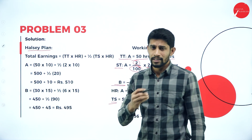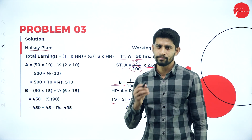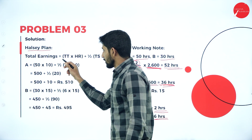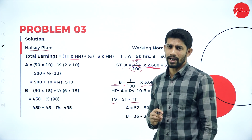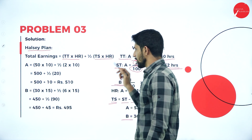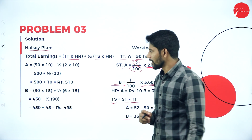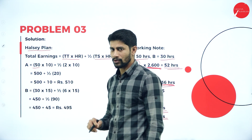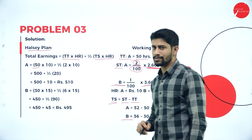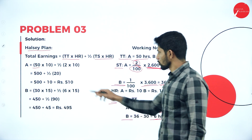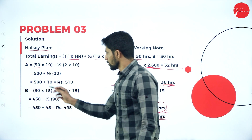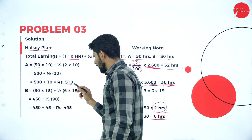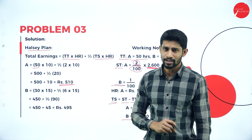Now we find out the total earnings under Halsey plan for Mr. A and Mr. B. The formula under Halsey plan is: time taken × hourly rate + half of time saved × hourly rate. For worker A: 50 hours × 10 rupees per hour plus half of 2 hours × 10 rupees per hour = 500 plus 10 = 510 rupees total earnings under Halsey plan.